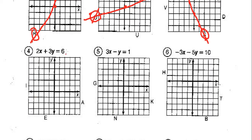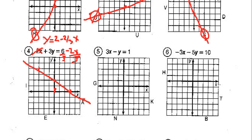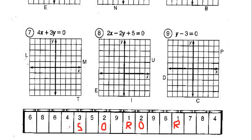Question number 4. Subtract 2x from both sides and divide by 3. That gives us y = 6/3 = 2, minus (2/3)x. We're going to put y at 2 — that's a negative slope — so we go down 2 over 3, down 2 over 3. And that's going to put us right into the A. So question 4 is going to be A.